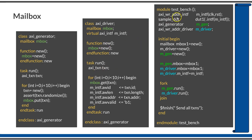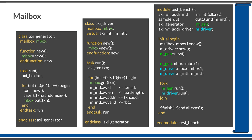To use these two classes in the testbench, you need to create them and connect them appropriately. In the testbench module, the interface and DUT are instantiated, as well as the generator (mgen) and driver (mdriver). In the initial begin block, a local mailbox named mbox1 is created, and both driver and generator are created using their new functions.